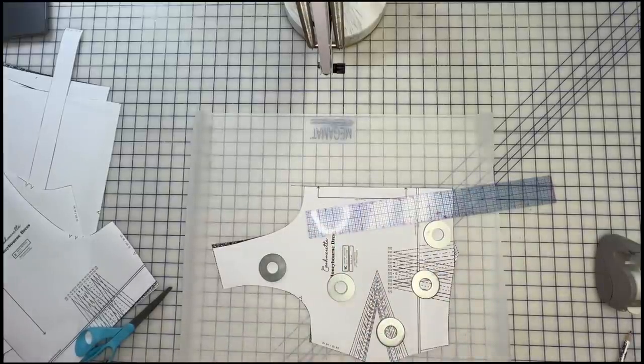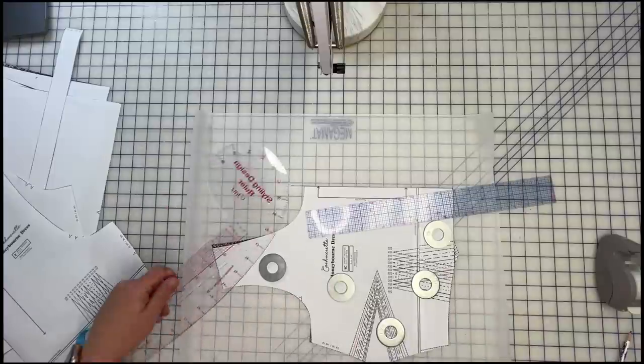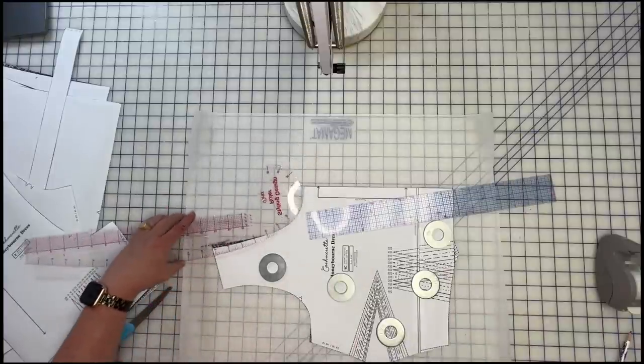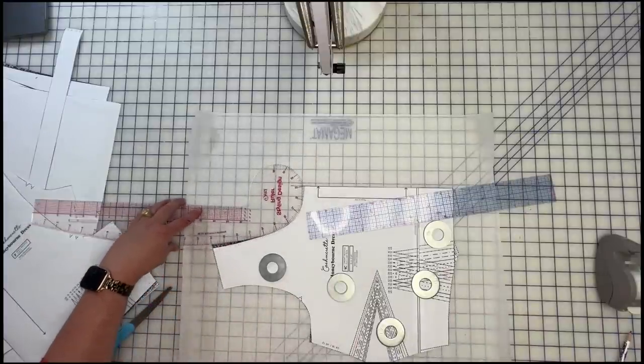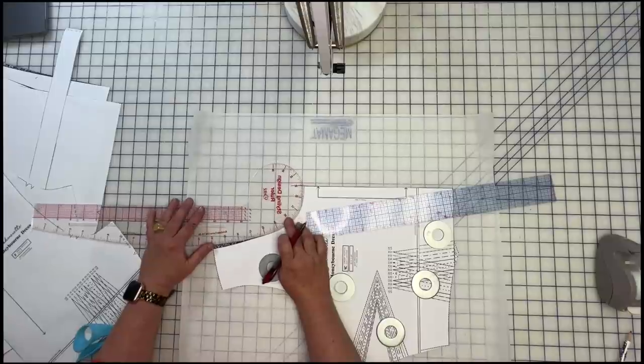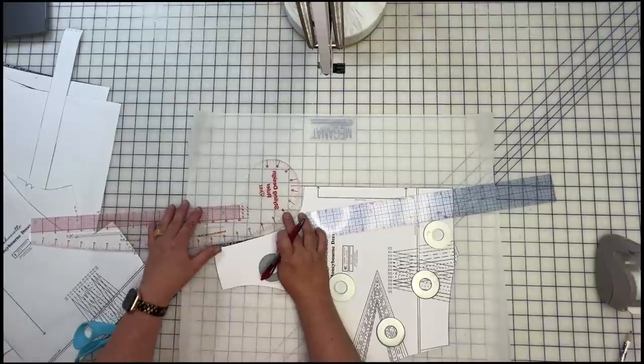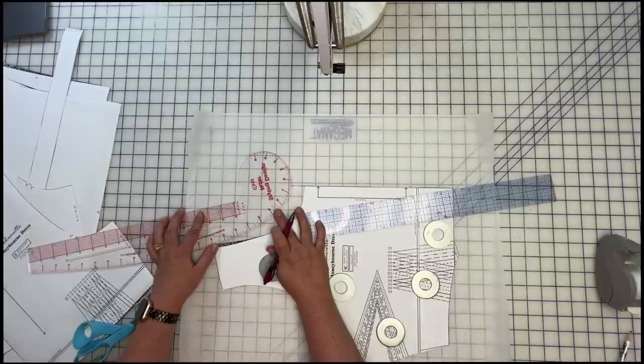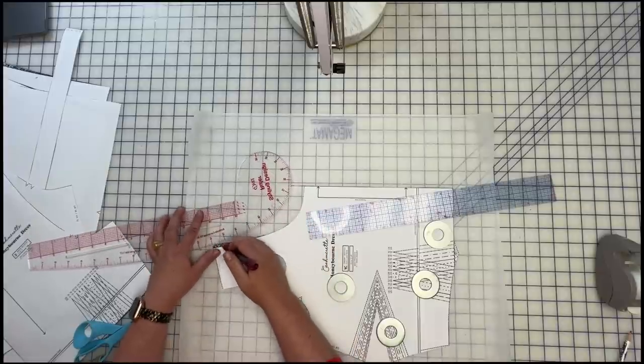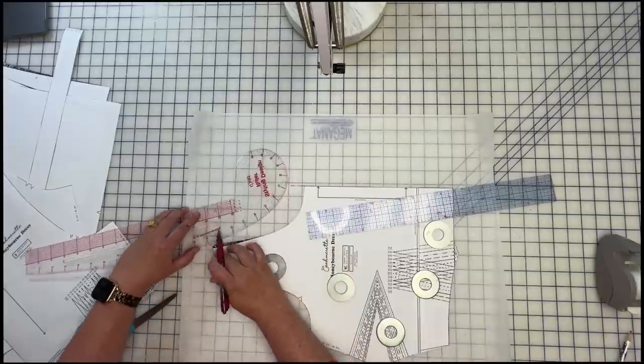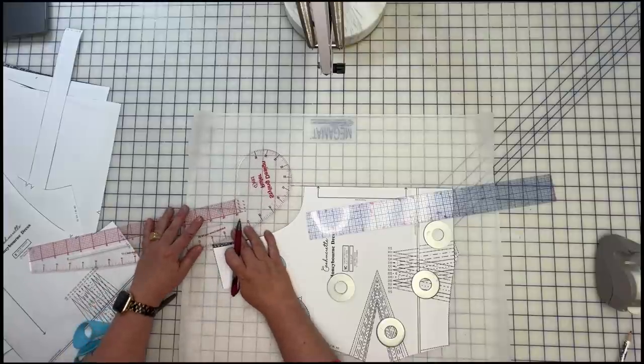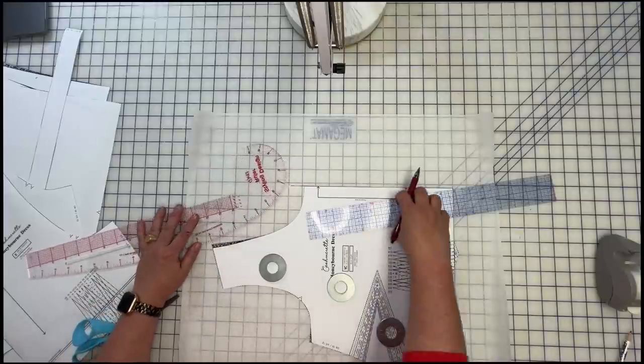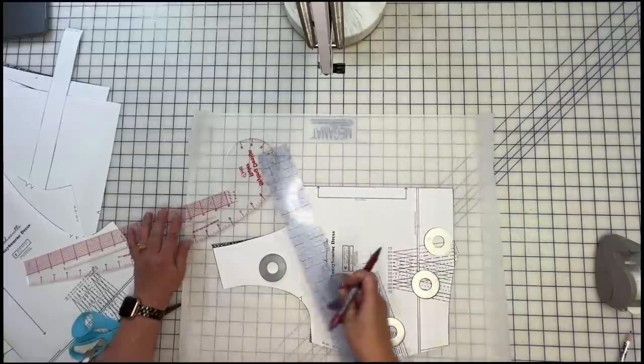Now, if you're doing this, you want a French curve or a hip curve like this. I got mine at Joann's, but you can kind of get it anywhere. And if I look here, you can kind of see the curve that's there of the current one. And I'm just going to pivot that out. So I'm not changing my shoulder at all.